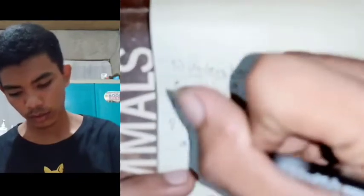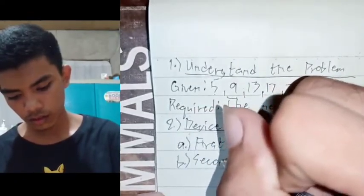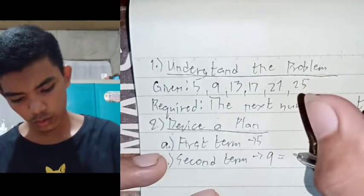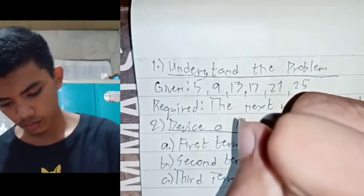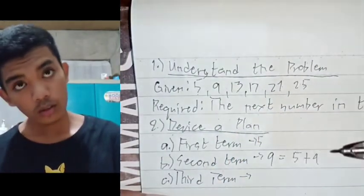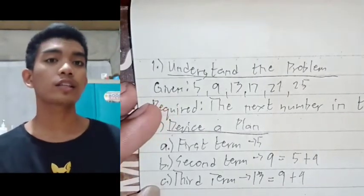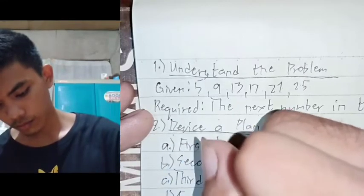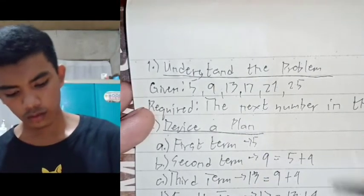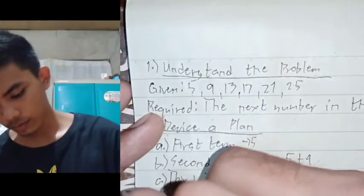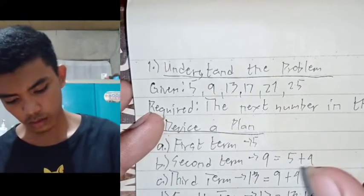The first term is 5. The second term is equal to 5 plus 4, which is 9. The third term is 9 plus 4, which is 13. The fourth term is 17 plus 4, which is 21. The fifth term is 21 plus 4, which is 25. And the sixth term is 25 plus 4.